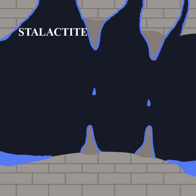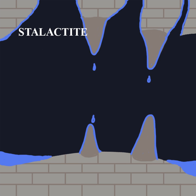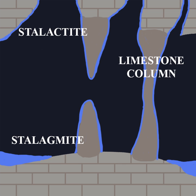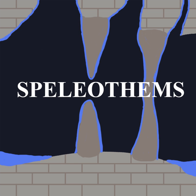The water that drops from the ceiling still contains the minerals that form the stalactite, which build up underneath the stalactite, forming a stalagmite. The stalagmite and stalactite can form mirror images and grow together to form one structure referred to as a limestone column. These structures are referred to as speleothems, which translates to cave deposit.